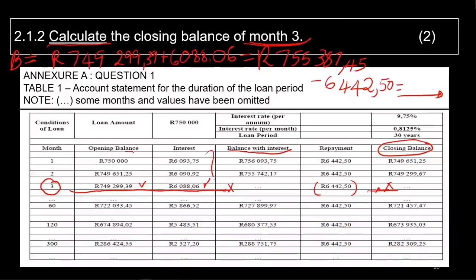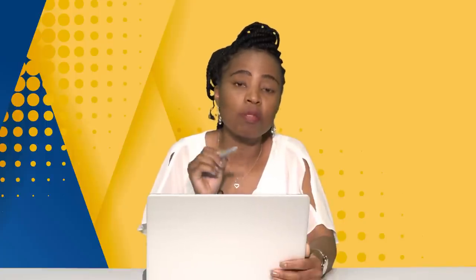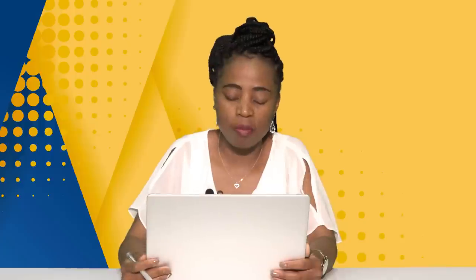Something important to note, grade 12s: look at your interest column. As the months continue, your interest goes down. By month 300, the interest is very low but the repayment stays the same. Initially a lot of the money you pay goes towards interest. With a home loan, you only start paying for your actual bond after many months. If you make larger repayments, it will decrease the interest and reduce the loan term or total interest paid.